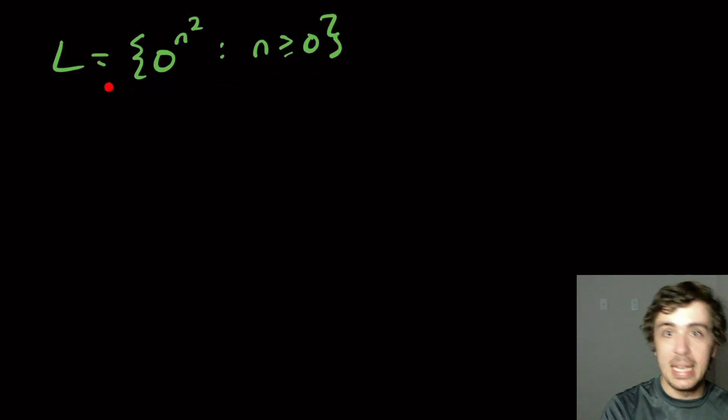Okay, so let's prove that this language is not regular. So n squared up here is for all integers at least zero. So this represents a perfect square number of zeros.